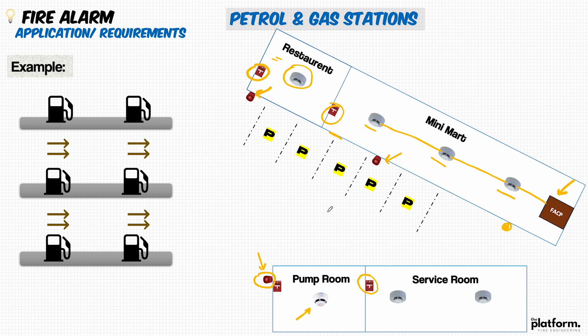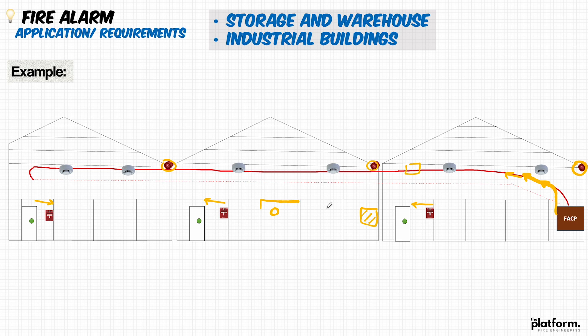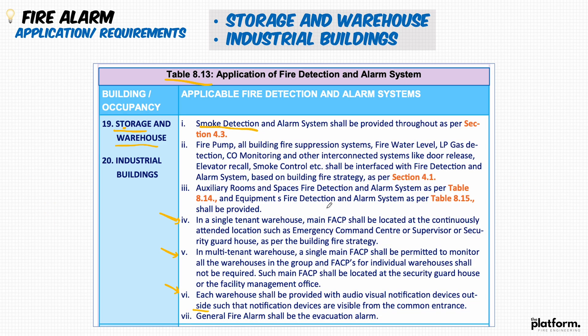Simply, today's lecture covered the application and selection of the fire alarm system, referring to the UAE Fire Life Safety Code of Practice, Chapter 8. When you need to know more about specific areas or occupancies — residential, commercial, malls, high-rise towers — you can refer to the code. Study each occupancy to understand the specific requirements. Thank you for watching, engineers. Stay tuned for the next lecture by the Platform of Fire Engineering, with me Mohammed Al-Hamad.